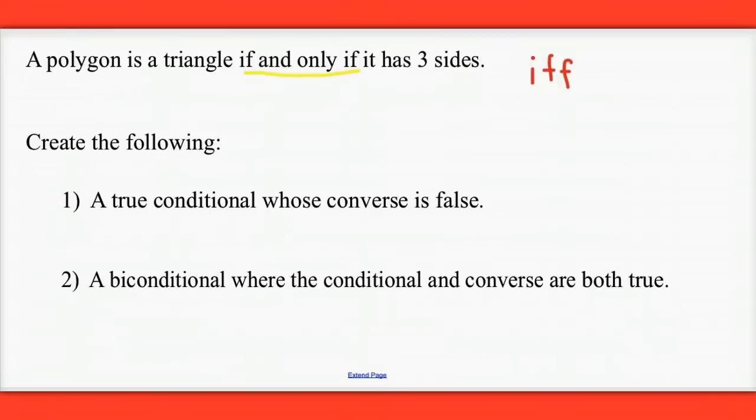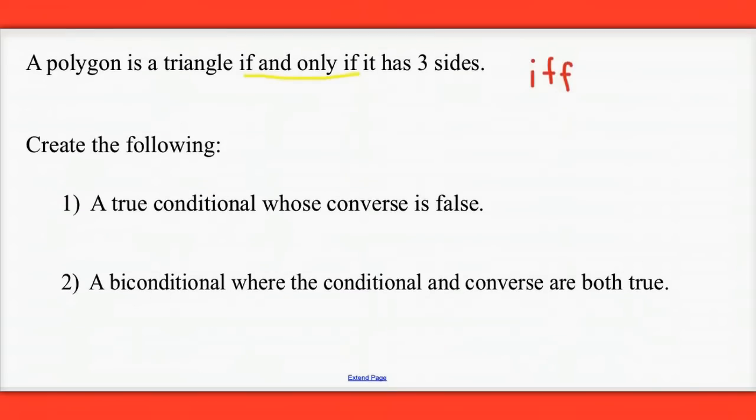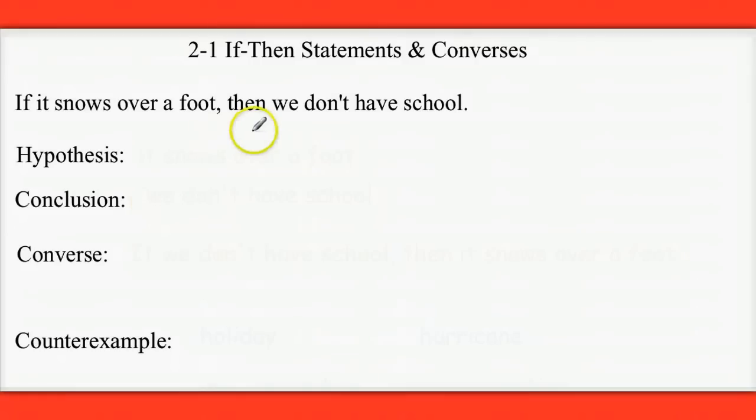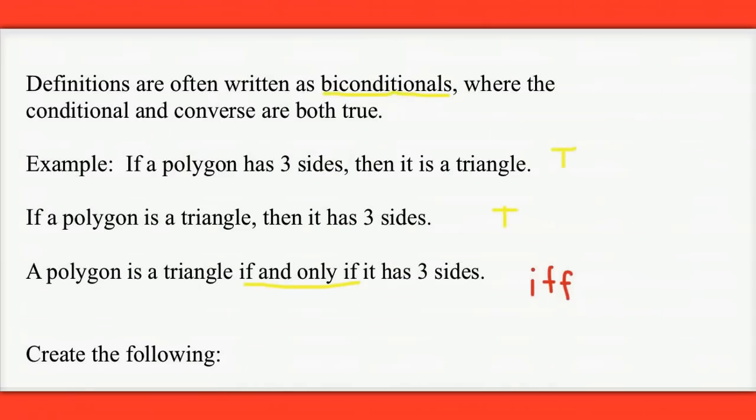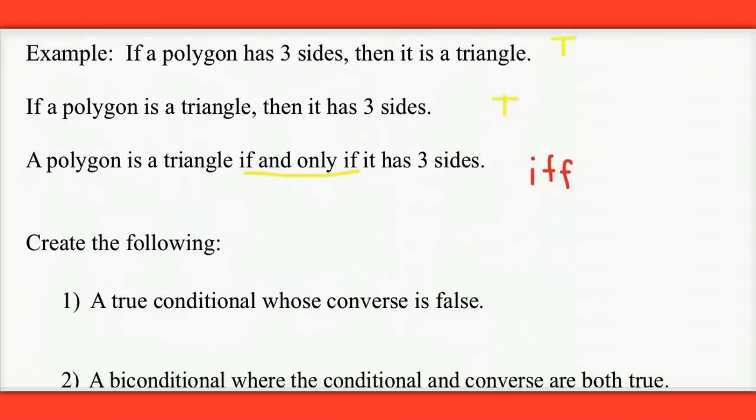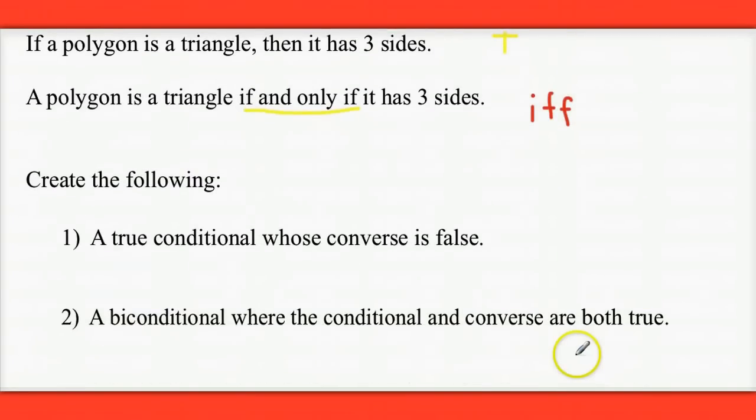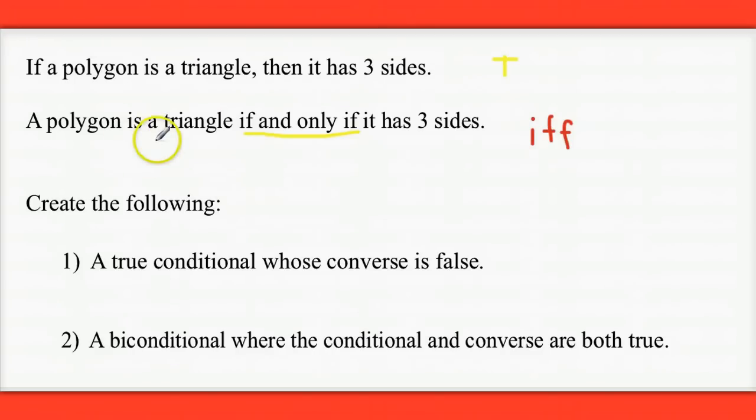All right, to finish up here, I'd like you to think of the following. I'd like you to create a true conditional whose converse is false, like what we had back here. We had a true conditional, but the converse was false. So that's the first thing I'd like you to think about. And the second thing is I would like you to write a biconditional where the conditional and the converse are both true. So that would be an example like this triangle example.